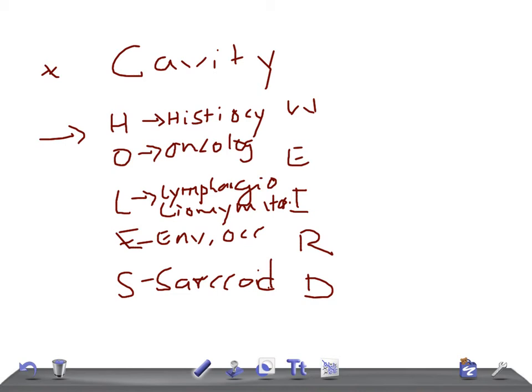Remember, if you see cavity lesions on a chest x-ray, the mnemonic is HOLES: H for histiocytosis, O for oncological causes, L for lymphangioleiomyomatosis, E for environmental and occupational causes, S for sarcoidosis.